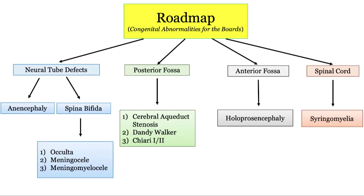Here's a list of what you'll be able to recognize by the end of this video: neural tube defects, posterior fossa abnormalities, holoprosencephaly in the anterior fossa, and syringomyelia in the spinal cord.